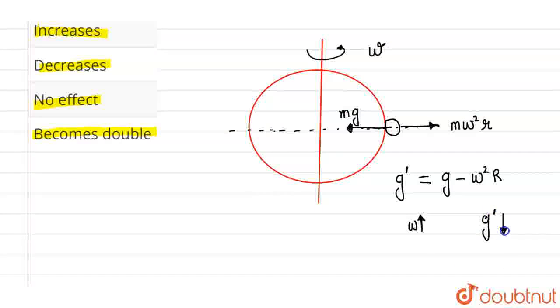The value of g dash will decrease, and this will cause the reduction in weight, because weight is given by mg dash. So, if g dash is decreasing due to increase in speed, therefore, weight will also decrease.